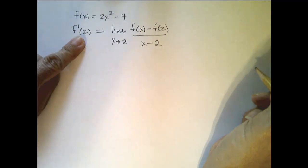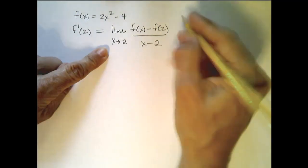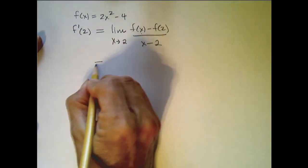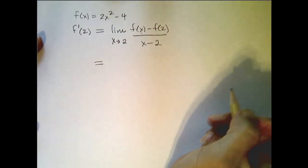That's what this means, f prime of 2 is equal to this limit, which is our derivative of f at 2. Alright, well let's go ahead and practice it, since we can never get too much practice taking limits.